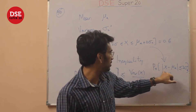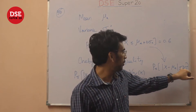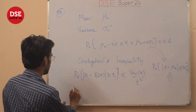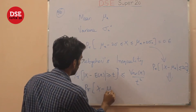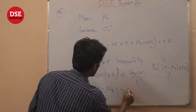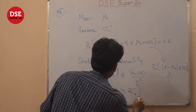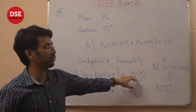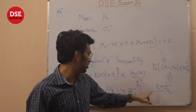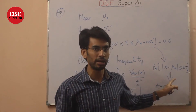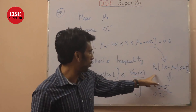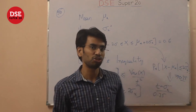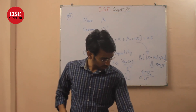This can be represented as P(|x − μ_x| ≤ 2σ_x), and by substituting t = 2σ_x and Var(x) = σ_x², we see that the minimum value this probability can take is 0.75. That is, this probability should always be greater than or equal to 0.75. Given that 0.6 is less than 0.75, the given statement is false — and that is the correct answer.